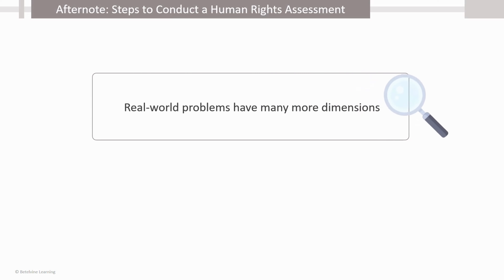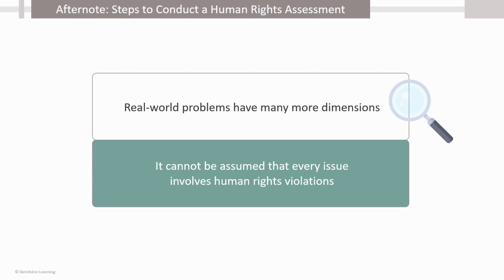Also note that we cannot assume that every issue involves human rights violations. Remember, we discussed in the beginning that not all human beings think of the good of the society. Thus, there may be police officers or public health care professionals who are corrupt. The state cannot be held responsible for the actions of its corrupt officers. However, the state becomes responsible when there is failure on its part to take the required action against corrupt officers.